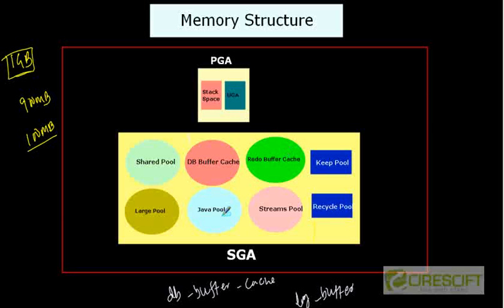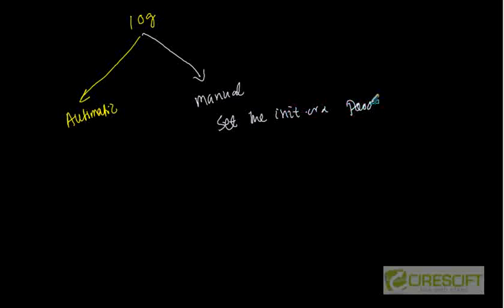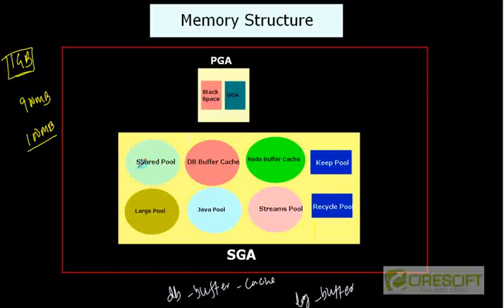Similarly, log_buffer is another parameter which determines how big is your redo buffer cache. Similarly, java_pool and large_pool — those things will determine how big are your pool sizes. That is one way to set it — set the init.ora parameter. Starting from Oracle 10G, Oracle introduced another way to size this value: instead of setting each individual pool, just tell how big your SGA will be.